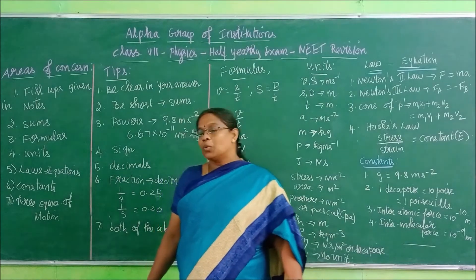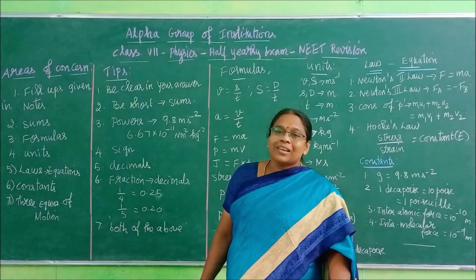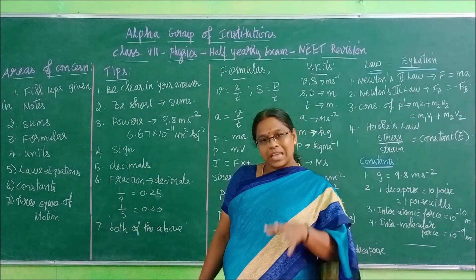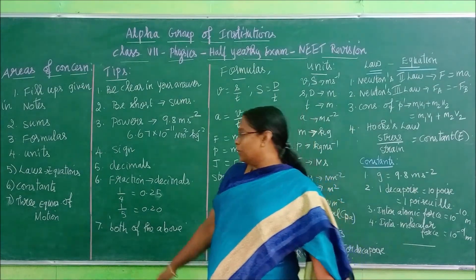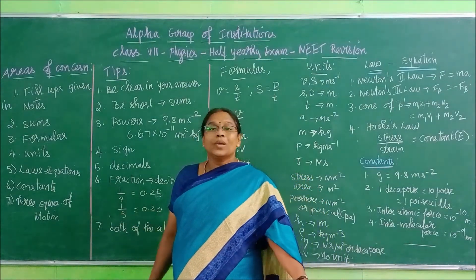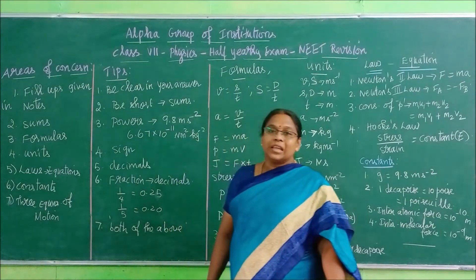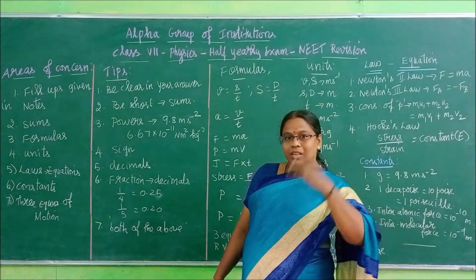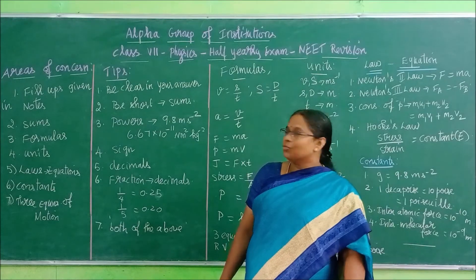The units for every quantity, and for certain laws you have in the lessons - for those laws, what are the equations? Based on that equation, sums can be asked, but that equation itself can also be asked. So you have to know all the constant values. These three equations of motion we learn: V = U + AT, S = UT + ½AT² - the three equations in full set. All those equations you need to be very clear about.